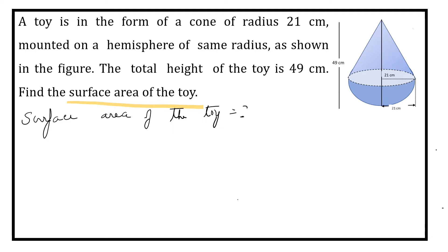We are given radius of the cone, which is 21 cm. Total height of the toy is 49 cm. Now we can calculate height of the cone. How?